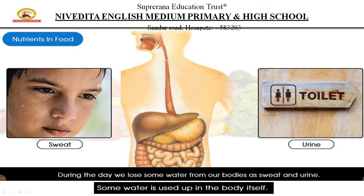Another thing — food also contains water. During the day, we lose some water from our body in the form of sweat, especially in summer or when we play, run, or do a lot of physical activity. We also lose water through urination, and some water is utilized by the body for various internal activities.